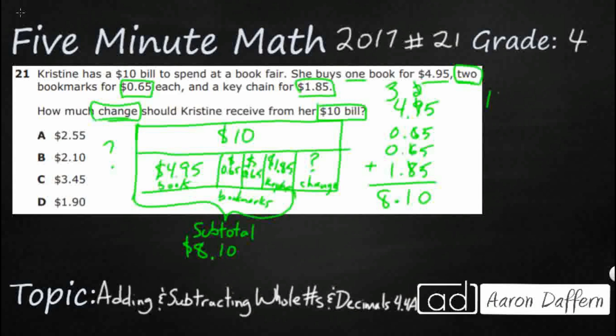Here's the problem though: we've got this $10 and we've got $8.10, but we need to line up the decimals. There is no decimal with that $10 bill, so when there is no decimal on a number, you can always put it after the ones place. So this is how we line it up: $10.00 minus $8.10. You can always put zeros — as many zeros as you want — after the decimal.